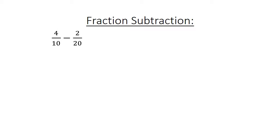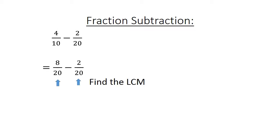Fraction subtraction: 4 over 10 minus 2 over 20. Find the lowest common multiple: 8 over 20 minus 2 over 20 equals 6 over 20. Simplify to 3 over 10.